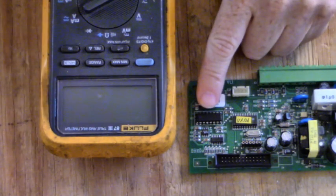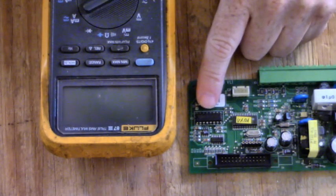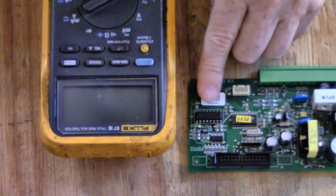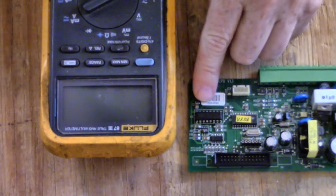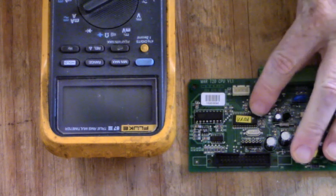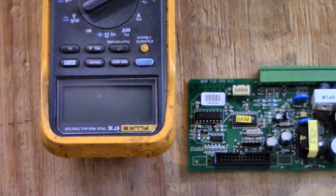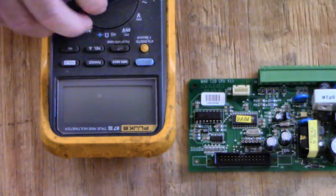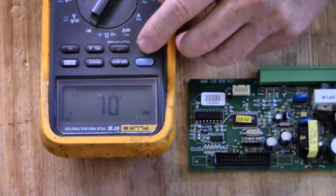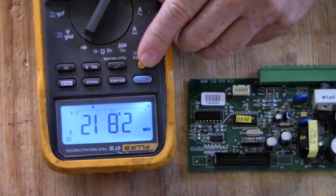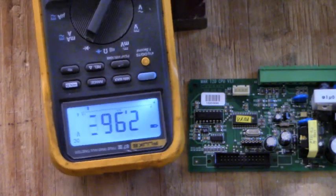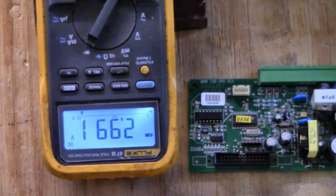Now this IC right here is the HCTL-2016. Over here is pin one which is data bit zero, and then coming down the other side 15, 14, 13, 12, 11, 10, 9, that's data bits one through seven. Over here we have a microcontroller labeled v1.01. First thing we're going to do is set our meter to diode test mode.